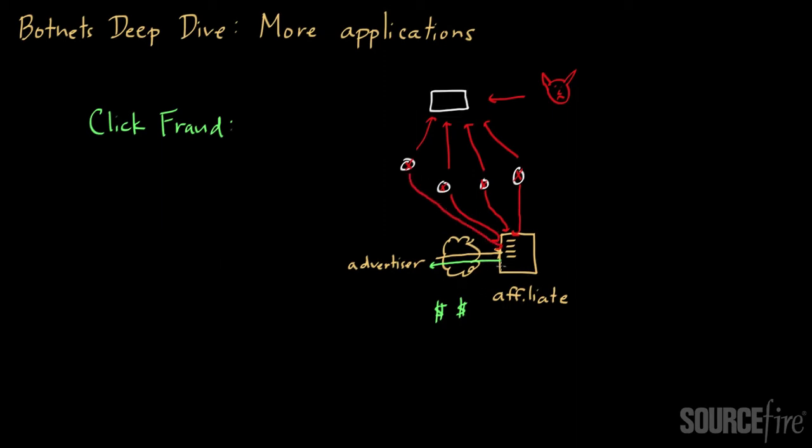Those clicks will in turn lead to traffic to the advertiser site. Now, this is obviously not legitimate traffic because these are not real people clicking on these ads. These are actually just botnets clicking on them. But the advertiser typically can't tell the difference. And so the advertiser will in turn be obliged to pay money to the affiliate for those clicks.